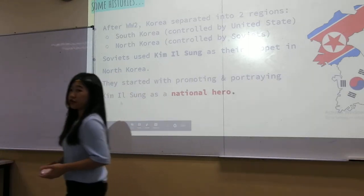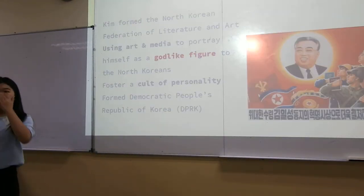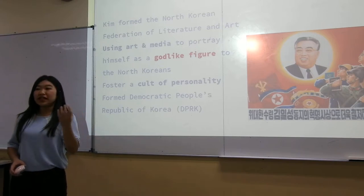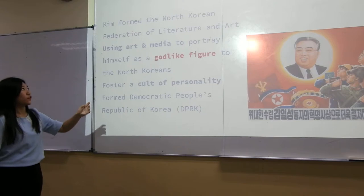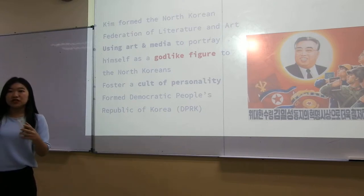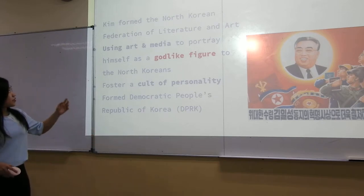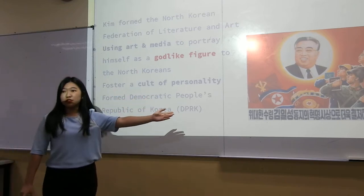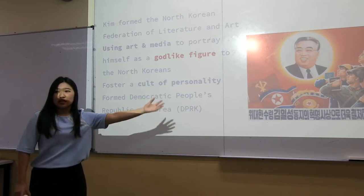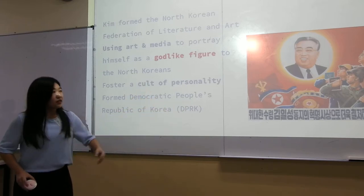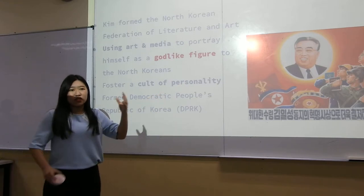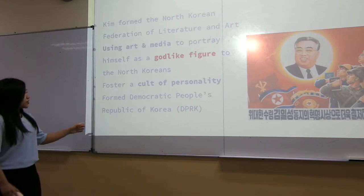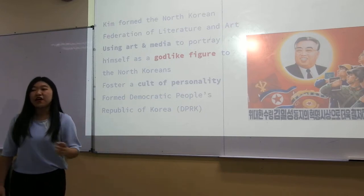Continuing the history of North Korea: Kim Il-sung became the leader of North Korea and formed the North Korean Federation of Literature and Art to control cultural output. He also used art and media to portray himself as a god-like figure to the citizens, as seen in many posters displayed throughout North Korea. He fostered a cult of personality and founded the Democratic People's Republic of Korea, DPRK — the government of North Korea.